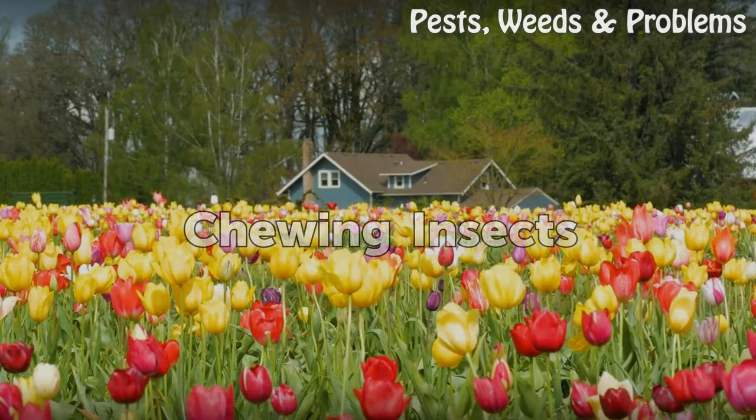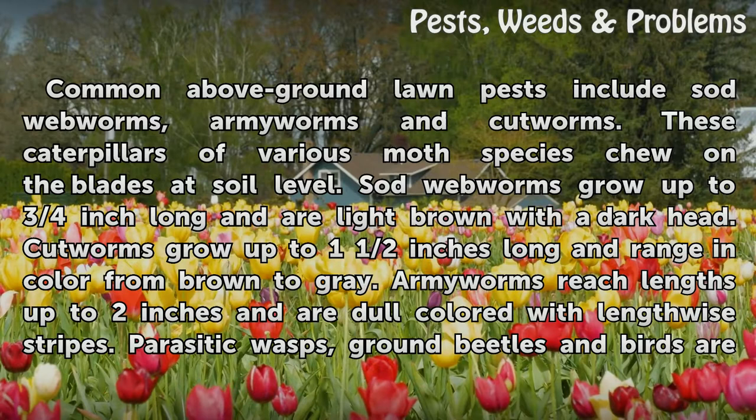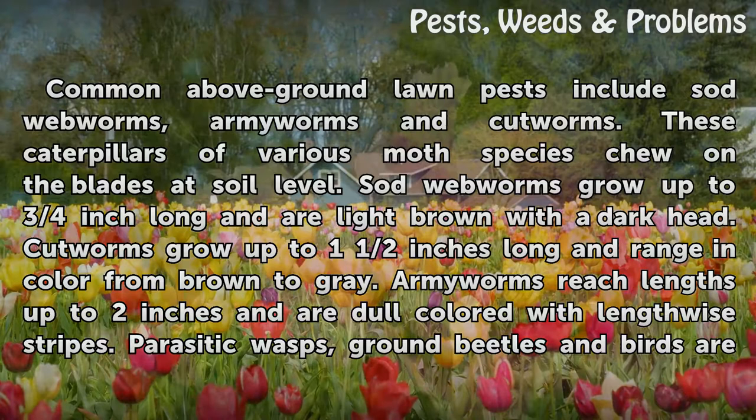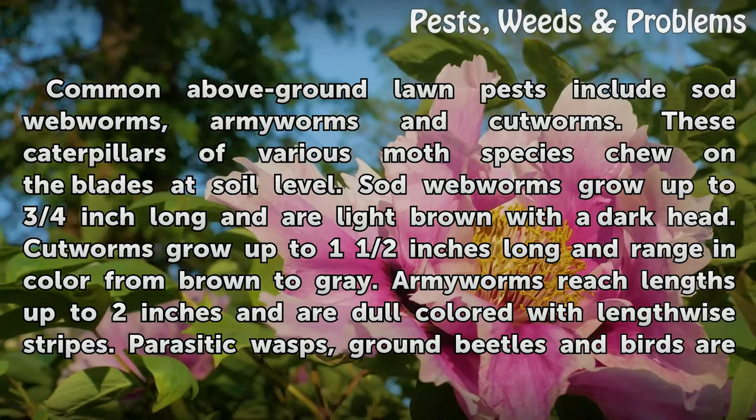Chewing Insects. Common above-ground lawn pests include sod webworms, armyworms and cutworms. These caterpillars of various moth species chew on the blades at soil level. Sod webworms grow up to three-quarters of an inch long and are light brown with a dark head. Cutworms grow up to one and a half inches long and range in color from brown to gray. Armyworms reach lengths up to two inches and are dull colored with lengthwise stripes.